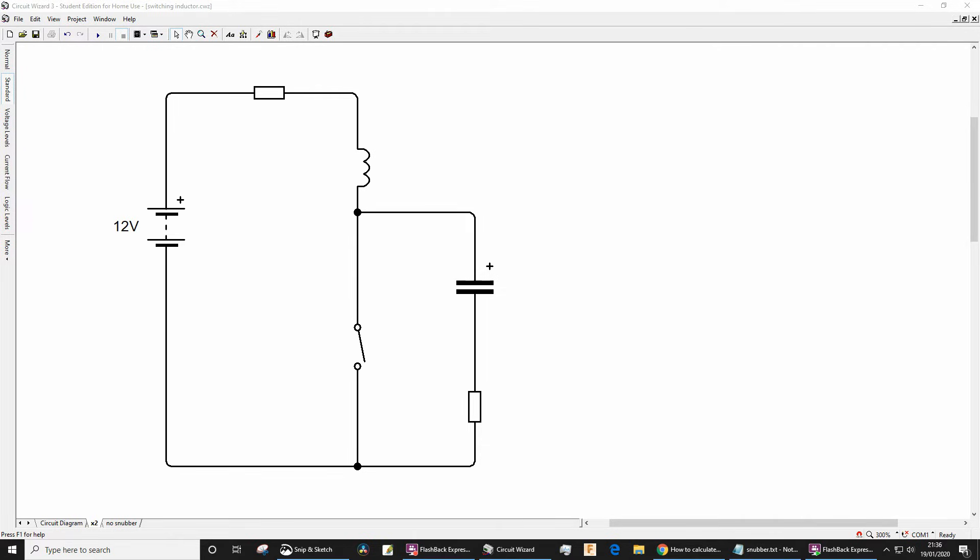In this video I'm going to explain how we can use an RC snubber network to reduce transient voltages across switches to acceptable levels. This is commonly done to protect switches and relays from voltage spikes when the switch is open, and it's needed when the circuit contains an inductive load such as a solenoid.